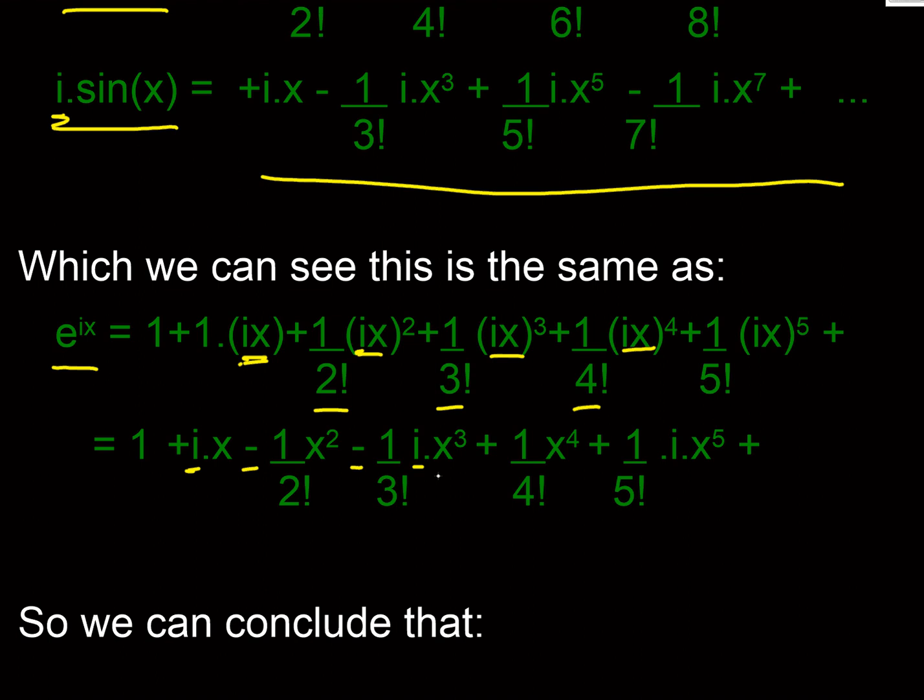In our third term we've got our minus but we've got another i coming through, so we've got a minus i to the power 3 over 3 factorial x cubed. And then we're back to a plus because here we've got i to the power 4, which is i squared all squared, so that's minus 1 squared gives us plus 1. So now we're back to a couple of plus terms and then we go to some minus terms.